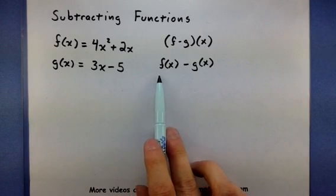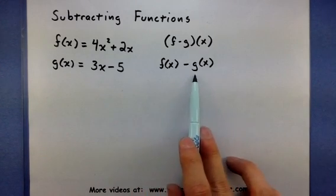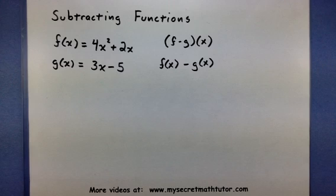So the alternate notation looks like this. Now we can see that it says take f, that function, and subtract g, that function. That's exactly what we want to do.